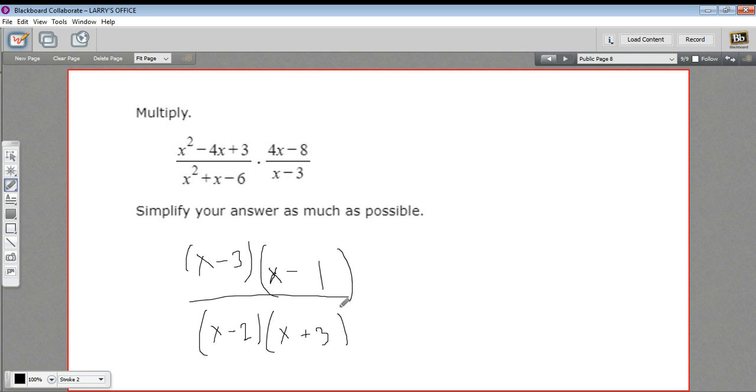All right so far no terms that can cancel but we're not done yet. We can also factor up here 4x minus 8, I can take a 4 out of that, so I'll do that - 4 times x minus 2 is what I'm left with there. And then on the bottom here we have an x minus 3.